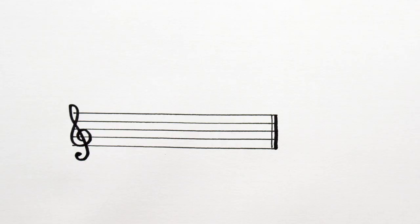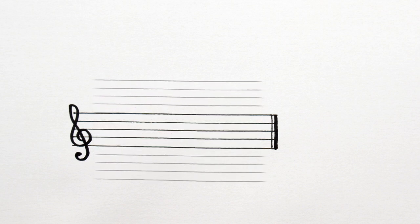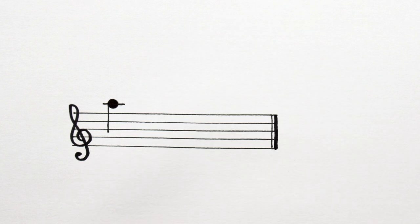Ledger lines and ledger spaces are really just extensions of the stave. So try to visualize something like this when you're drawing ledger notes. Keep your ledger lines the same distance apart as the stave lines and everything will be nice and clear.